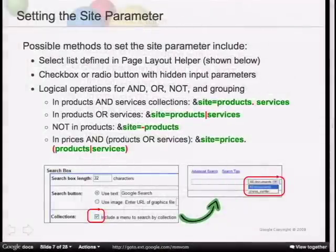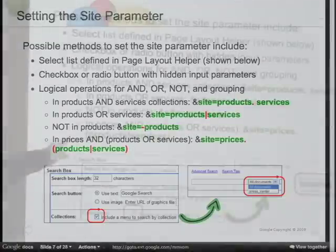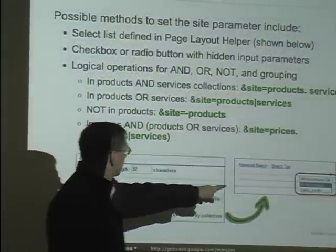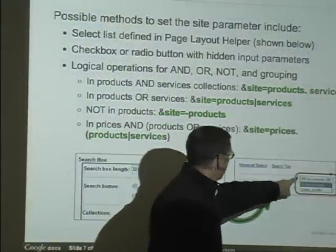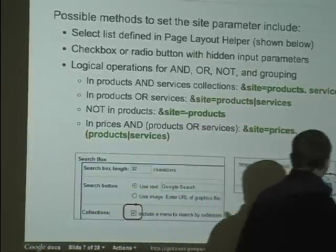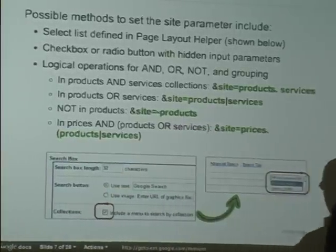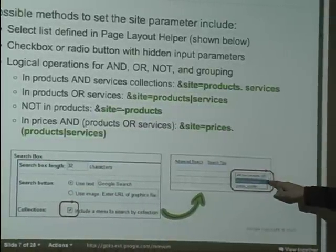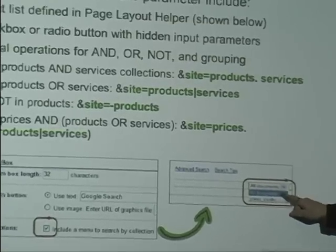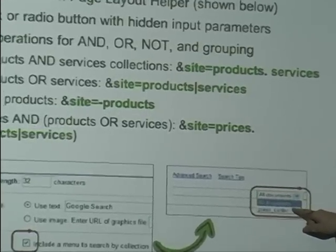Collections are governed by the 'site' parameter. There are a couple of options. One is to go to the front end and enable it as a drop-down box — which you may have seen something similar to in Test Center — and the user can then select which collection they want to use.